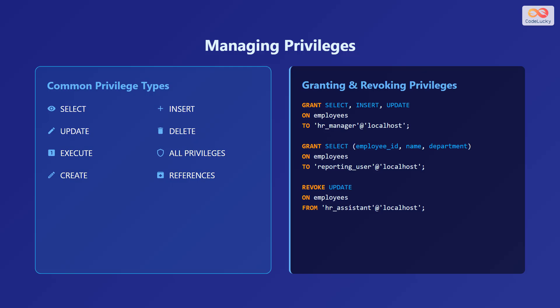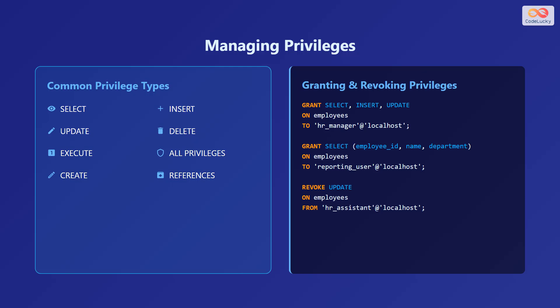REFERENCES privilege allows users to create foreign key constraints that reference other tables. Here are examples of granting and revoking privileges. To grant SELECT, INSERT, and UPDATE on the employees table to hr_manager: GRANT SELECT, INSERT, UPDATE ON employees TO 'hr_manager'@'localhost'. To grant SELECT on specific columns (employee_id, name, department) from employees to reporting_user: GRANT SELECT (employee_id, name, department) ON employees TO 'reporting_user'@'localhost'. To revoke UPDATE on employees from hr_assistant: REVOKE UPDATE ON employees FROM 'hr_assistant'@'localhost'.